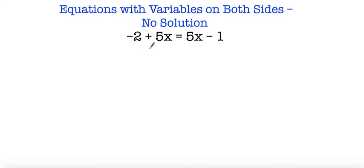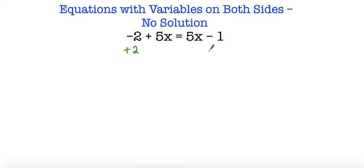So negative 2 plus 5x is equal to 5x minus 1. First things first, I'm going to move all my constants to one side and all my variables to the other side so that I can solve for x. It doesn't really matter which side you move your variables to, but I'm going to add 2 on both sides so that I can move my constants to the right side.